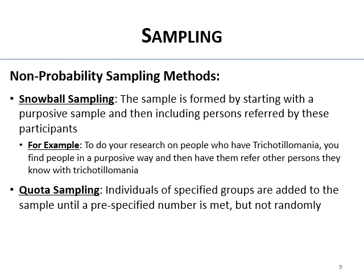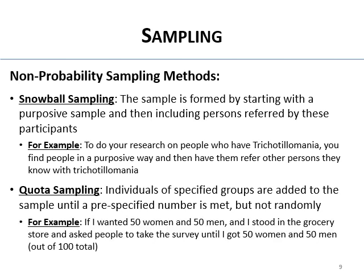Quota sampling is frequently confused with stratified sampling, but it's when individuals of specified groups are added to your sample until a pre-specified number is met — and it's not done randomly. You're trying to get, say, 50 women and 50 men, so you stand in front of a grocery store and ask people to take your survey until you've got 50 women and 50 men.